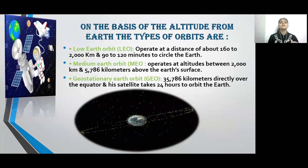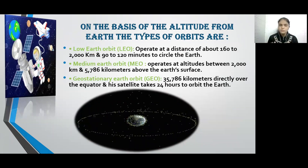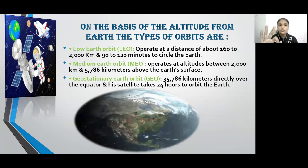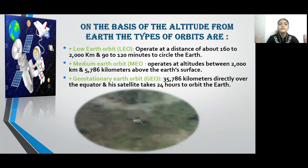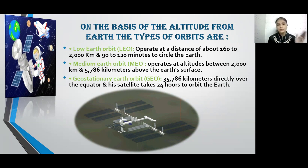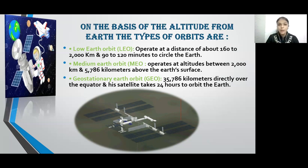Here we will discuss altitude — meaning at what height we can send satellites for research and other purposes. There are three ranges of heights: low earth orbits, medium earth orbits, and geostationary earth orbits — also called LEO, MEO, and GEO. Low earth orbits (LEO) are at a distance of about 160 to 2,000 kilometers from Earth's surface. Medium earth orbits (MEO) are placed at a distance of about 2,000 to 5,786 kilometers above Earth's surface. Geostationary earth orbits (GEO) are the farthest, placed at about 35,786 kilometers directly over the equator.